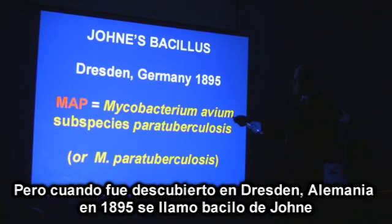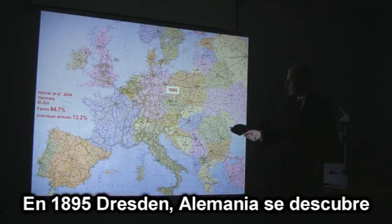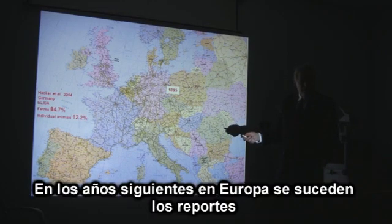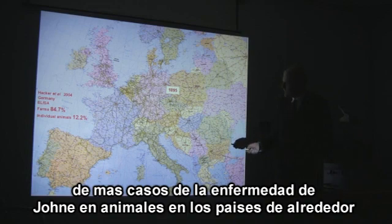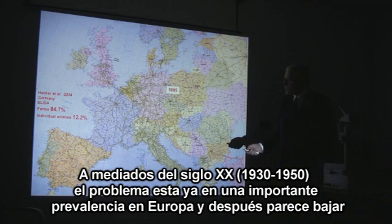That's what it's called now. When it was first discovered in Dresden, Germany in 1895, it was called the Johne's bacillus. And in between, it's been called M. paratuberculosis. Here is where it was discovered in Europe in 1895 in Dresden. And in the years that followed, reports occurred from all over Europe saying we have identified the Johne's bacillus in our cows too. In the middle part of the 20th century — the 1930s, 40s and 50s — clinical disease in our animals was widespread. And then clinical disease appeared to decline.